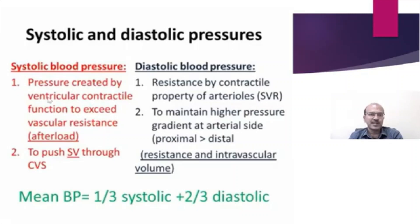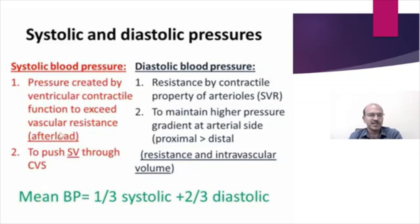It is very important to know what systolic and diastolic blood pressure means and what the mean blood pressure is. The systolic blood pressure is created by the ventricular contractile function to exceed the vascular resistance or afterload. The heart pumps to eject blood to the rest of the body, and to reach the peripheral parts it needs to overcome the vascular resistance. This pressure that the heart ejects is the systolic blood pressure, and it is used to push the stroke volume through the cardiovascular system.